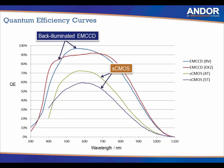Quantum efficiency curves show four graphs: two for back-illuminated EMCCD and two for sCMOS cameras. There is a big difference in quantum efficiency, and the main reason is that EMCCD cameras are back-illuminated, making them much more sensitive. The back-illuminated EMCCD cameras have essentially been turned upside down, illuminated on the back surface of the sensor. With the blue curve, quantum efficiency is very high — especially around 500 to 600 nanometers, reaching above 95% quantum efficiency.